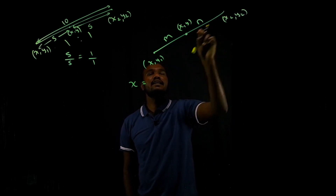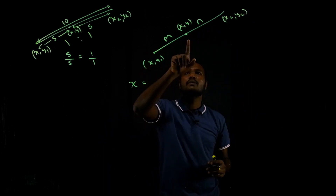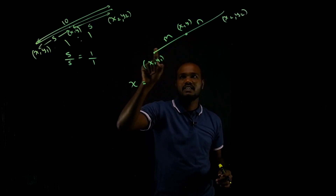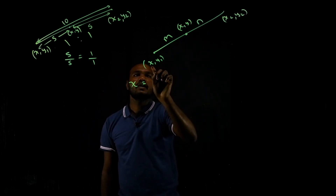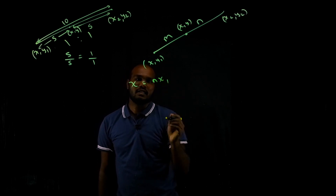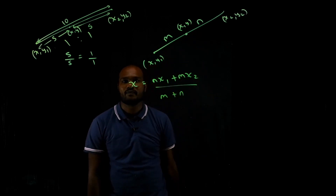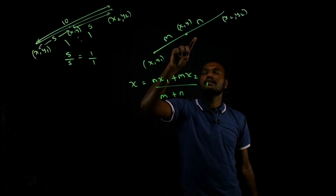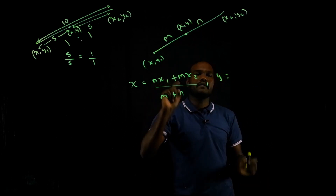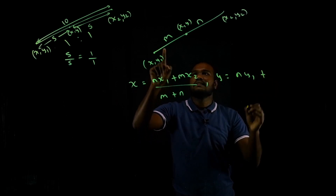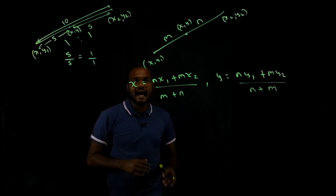This is the formula for internal division — when the point is in between them. To find x: take n into x1 plus m into x2, divided by m plus n. Similarly, to find y: n into y1 plus m into y2, divided by m plus n. You have to remember this formula.